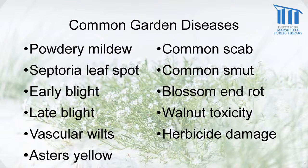We're going to talk about these common garden diseases: powdery mildew, septoria leaf spot, early blight, late blight, vascular wilts, aster yellows, common scab, common smut, and blossom end rot. These last three — blossom end rot, walnut toxicity, and herbicide damage — are not really diseases, but environmental factors that can also affect plants.